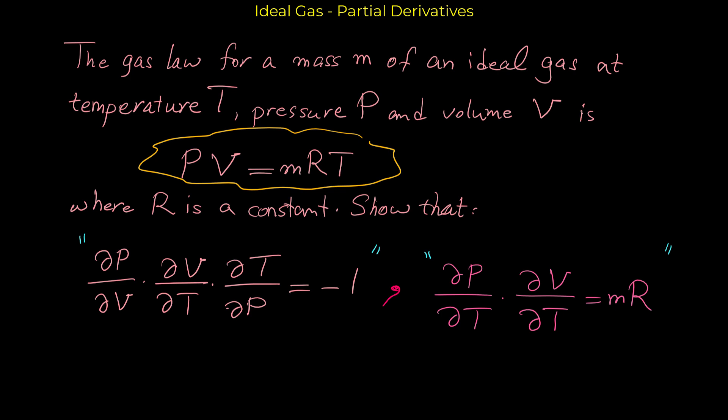Let's start. First we have to find the partial derivative of p with respect to v. When we look at this relation we can see that p and v are multiplied by each other — we don't have p equal to something. So from this relation we are going to find p in terms of v: p equals mRT divided by v. This way we don't need to do implicit differentiation, though that is another valid approach.